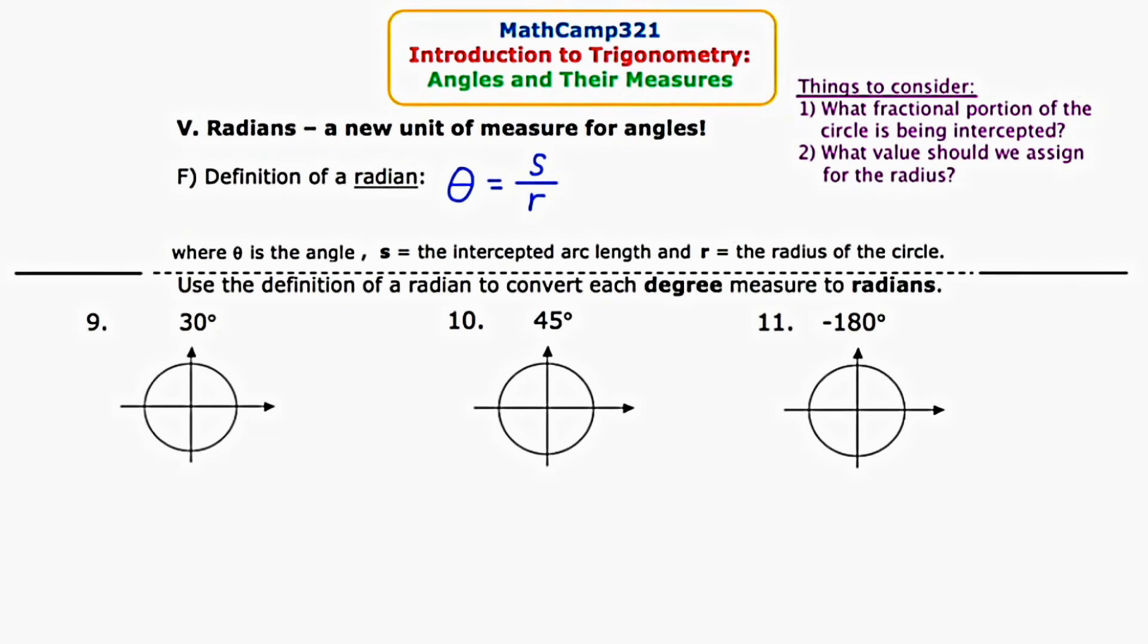Hey there, this is MathCamp321, and in this video we're going to be talking about radian measure. What exactly is a radian? Up until this point you've probably always measured angles in units known as degrees, but in trigonometry there's a preferred unit of measure, and that's the radian. If we look up the definition of what a radian is, it is the ratio of the intercepted arc length to the radius. At first it's going to seem a little confusing, but we're going to take a look at three examples.